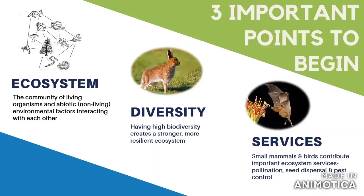The three concepts are ecosystem, diversity, and ecosystem services. An ecosystem is the community of living organisms and abiotic environmental factors which are interacting with each other. We're talking about all the different species interacting with their environment and all the different relationships that they have. These ecosystems can get very complicated — there are a lot of different species, especially when you've got a lot of diversity.